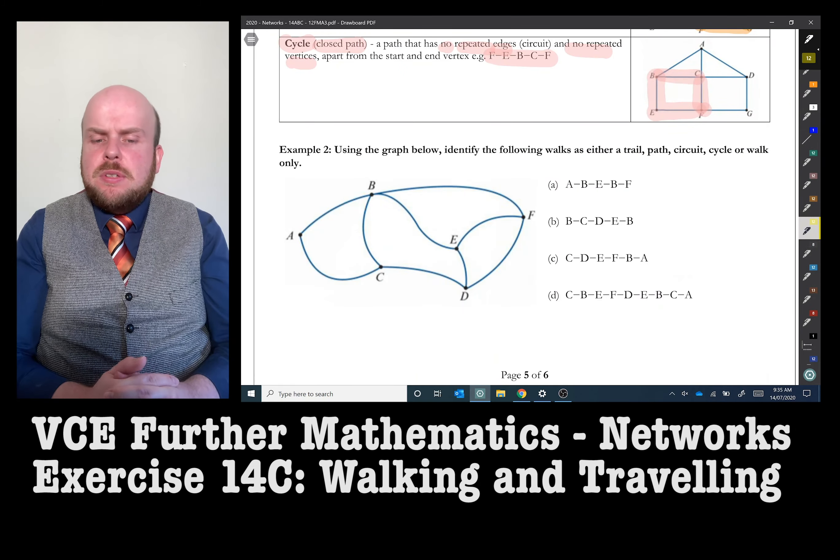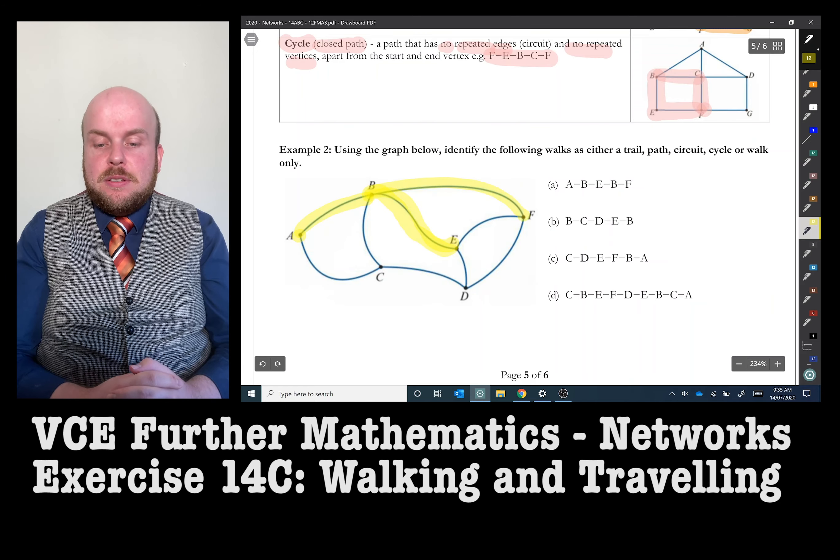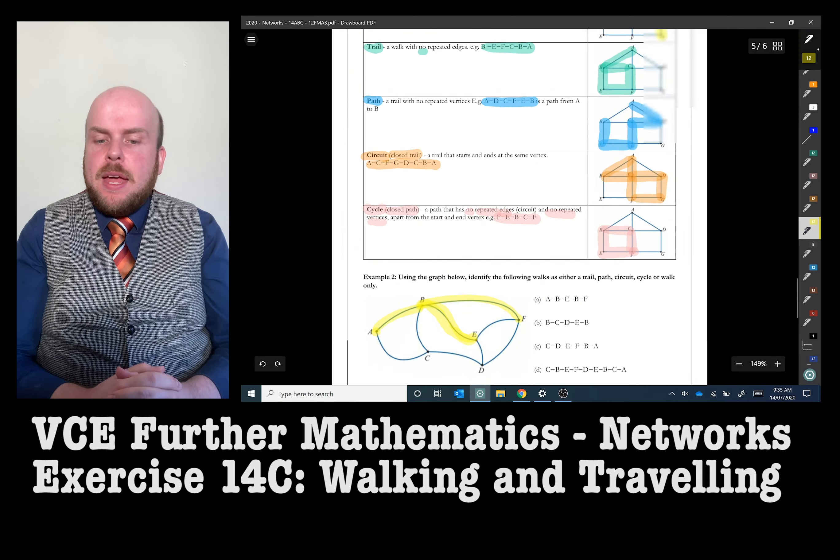So in example two, using the graph below, identify the following walks as either a trail, path, circuit, cycle or walk. A-B-E-B-F is only a walk because it has repeats going on there.